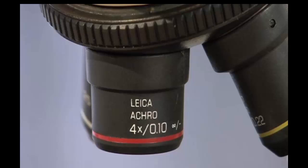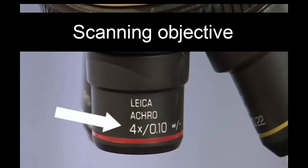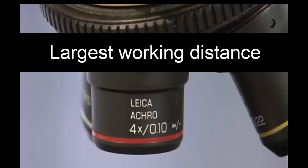The smallest objective lens is the 4x lens, which is referred to as the scanning objective. It magnifies the image four times its original size and has the largest working distance.